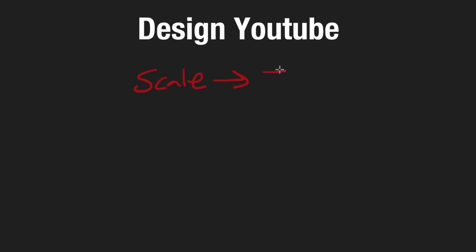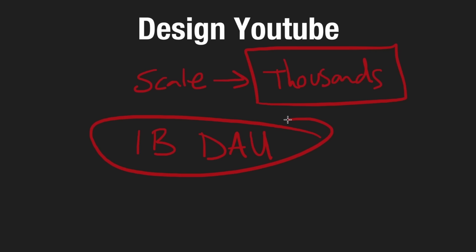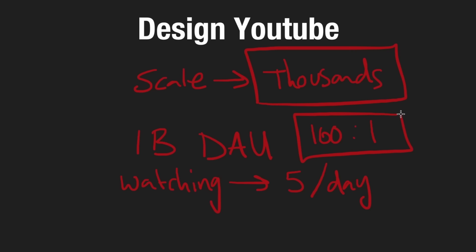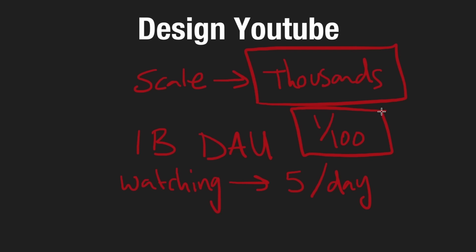Talking about the scale we're going to be handling, even a single video can have potentially thousands of concurrent viewers. We're going to have a ton of users. Let's assume we're designing YouTube to handle a billion daily active users, which is about accurate. Each user is watching five videos per day, but the upload ratio is going to be 100 users watching for every one user uploading. So we have five billion videos watched per day. If the ratio is 100 to one, that means one percent of five billion is the number of videos uploaded per day: 50 million videos uploaded per day. A massive amount of throughput.